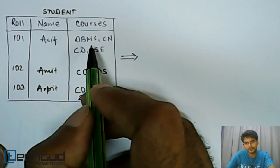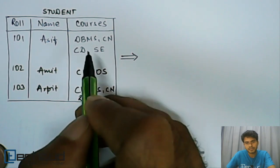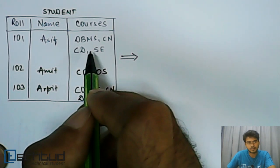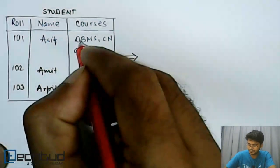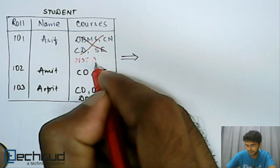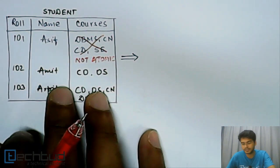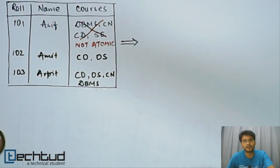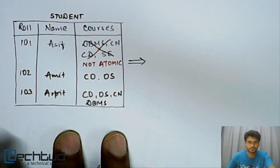They have four subjects and they have entered all the subjects name into this particular field only. So this is not atomic. Basically it is not satisfying our criteria for being in first normal form. So this is not in first normal form.